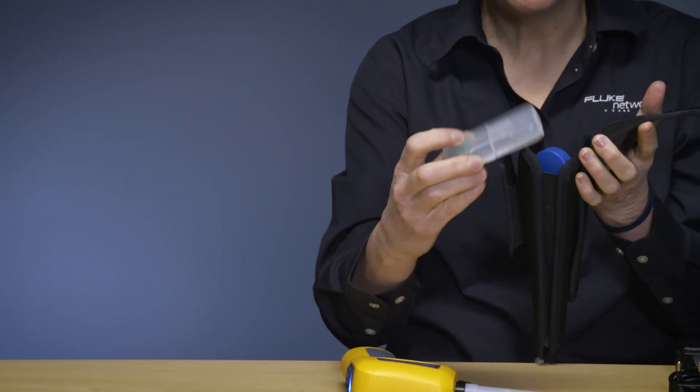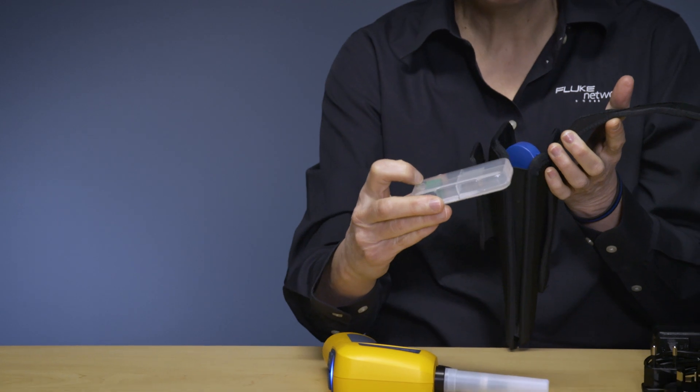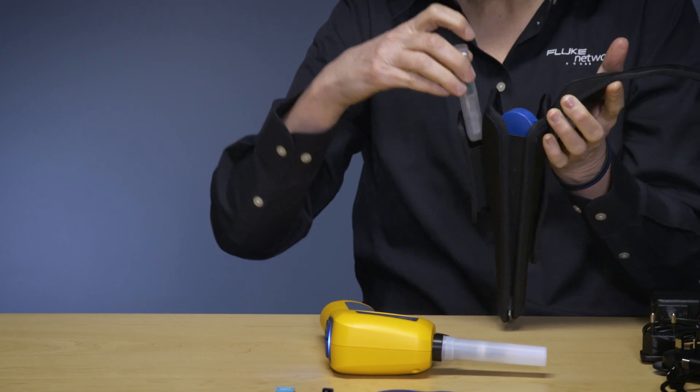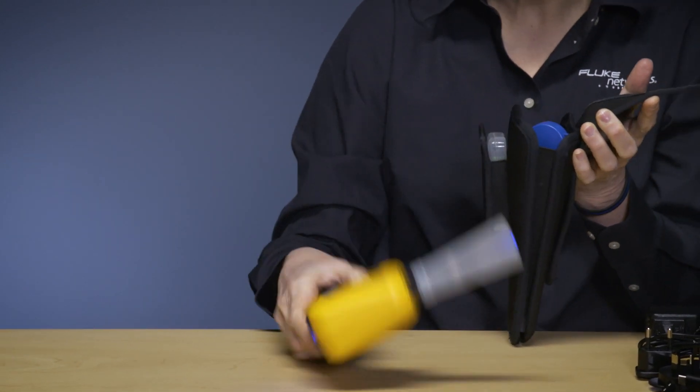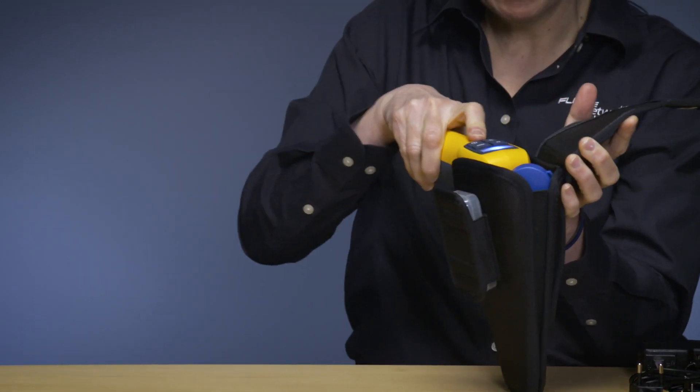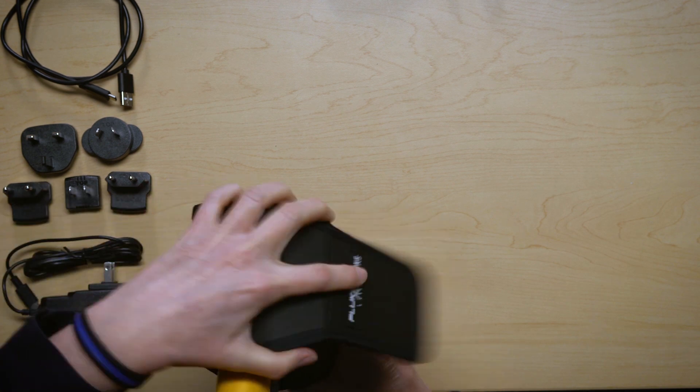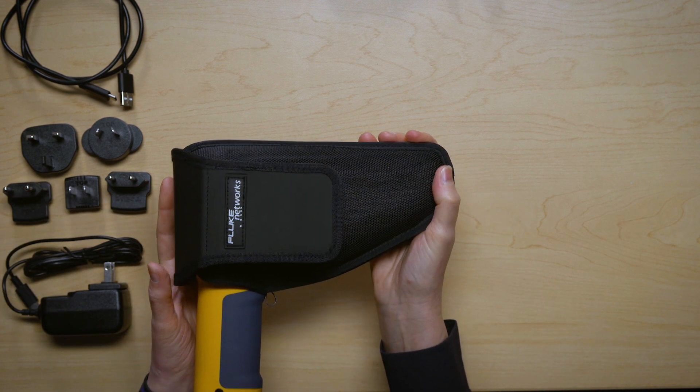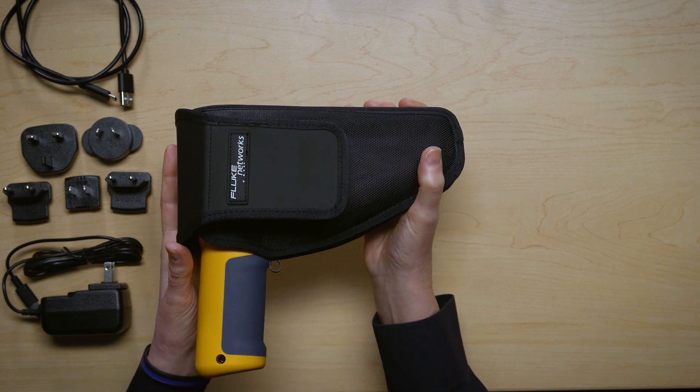The little container that is holding all of my adapters and tips so if I need to change adapters or tips when I'm in the field I have them with me goes right here in the front. Then the probe itself just drops right in and close the front and there I go. I have my package. Everything I need to test MPO or single fiber in the field.